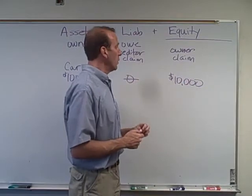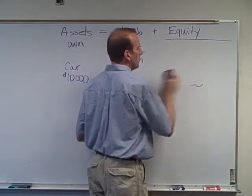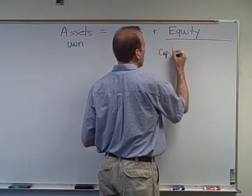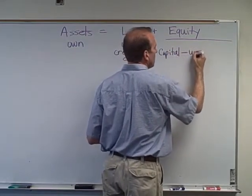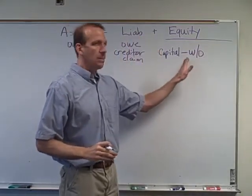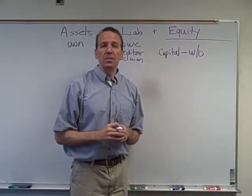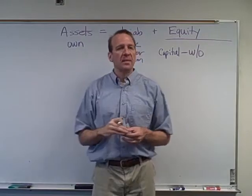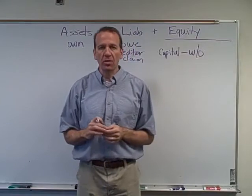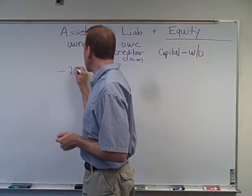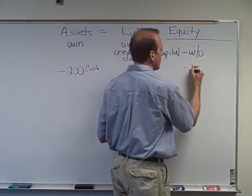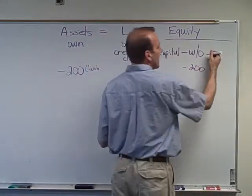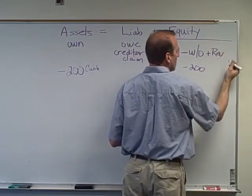Equity - the owner's claim - can be broken down into four components. First, we have the capital account, which tracks the owner's balance. From that we subtract out withdrawals. If you're the owner you can take cash out of the business; we'd reduce our cash asset and record a withdrawal, which reduces your equity. For example, taking two hundred dollars out means negative two hundred dollars in cash and a two hundred dollar withdrawal reducing equity.